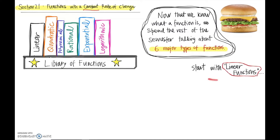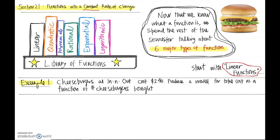We start with linear functions, and the first example we're going to look at has to do with the price of a cheeseburger. Cheeseburgers at In-N-Out cost $2.40. Produce a model for total cost as a function of cheeseburgers bought. Our job here is to produce a model — in other words, produce a function — for total cost as a function of number of cheeseburgers bought.